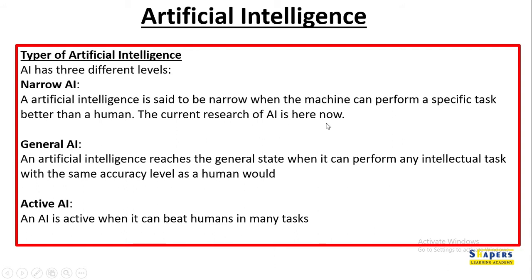Current AI research is at the narrow AI stage. The automated machines you see in various industrial environments, replacing humans and doing prescribed work, is narrow AI. Most production centers have narrow AI. General AI is reached when a machine can perform any intellectual task with the same level of accuracy as a human, with certain reasoning abilities.